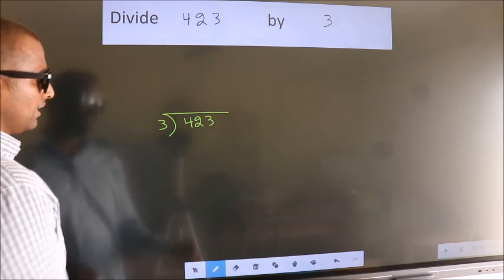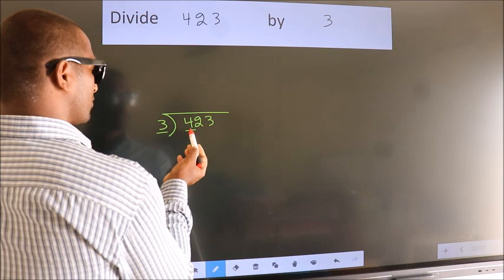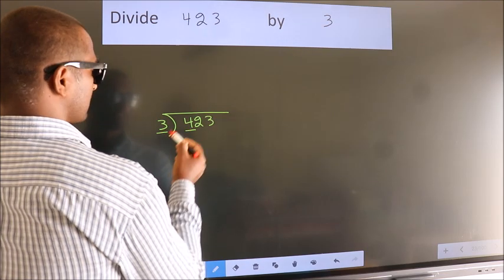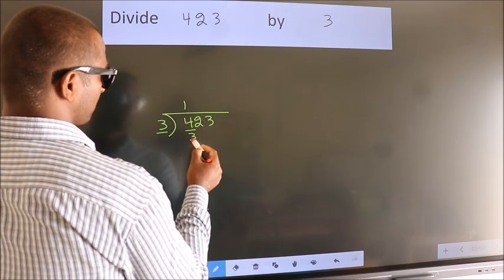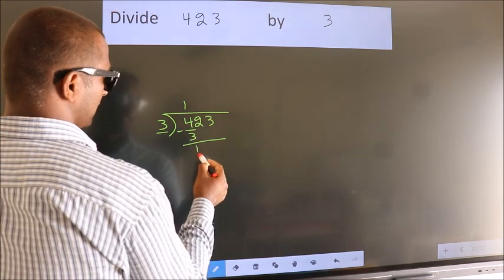Next, here we have 4, here 3. A number close to 4 in the 3 table is 3 ones 3. Now we should subtract. We get 1.